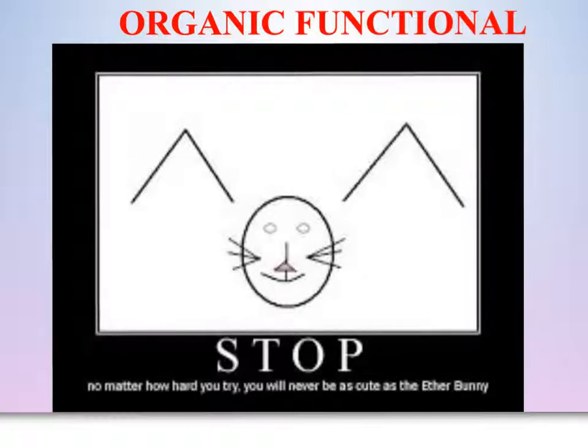We will look towards the end of the video series at a few types of chemical reactions associated with the functional groups. But right now we will be concentrating on identifying the various groups, and this will include alcohols, aldehydes, ethers, carboxylic acids, etc.